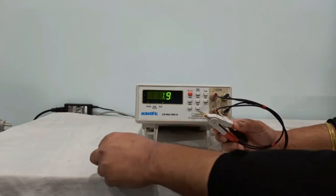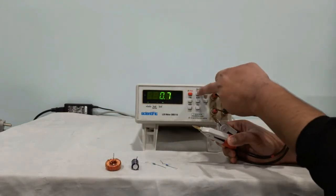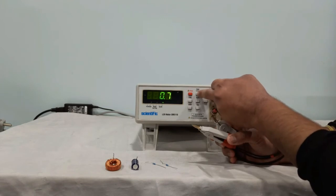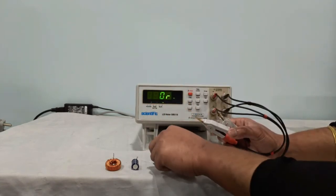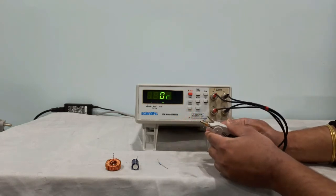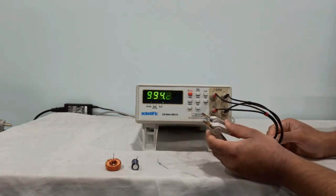Now we will move to resistance. In order to go to resistance mode, we will press this switch once, the mode switch. So now it is in R mode. Now we will connect this 1K resistance. 1K is reading as 994.2 Ohm.